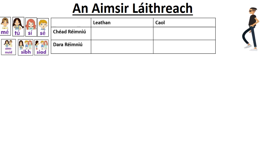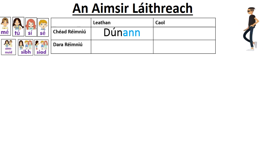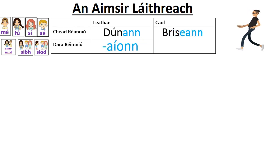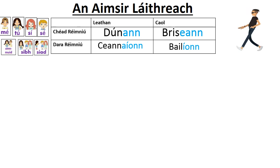We have one ending in the aimsir láithreach that we use for mé, tú, sé, sí, sin, muid, sibh, and siad. We can use this ending for any of them. For our single-syllable broad verbs it's '-ann', for narrow '-eann'. In our two-syllable group, '-íonn', and again '-íonn' with the 'a' knocked off for narrow. Examples: dúnann, briseann, ceannaíonn, bailíonn.